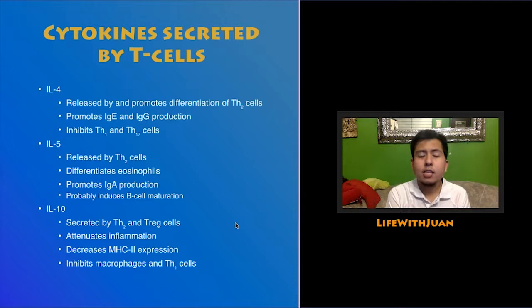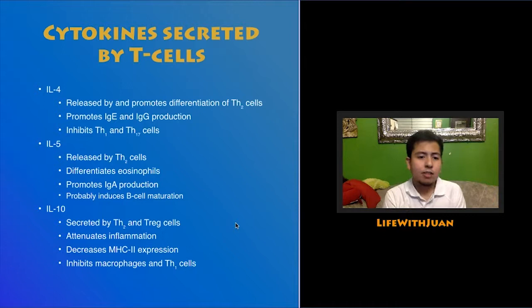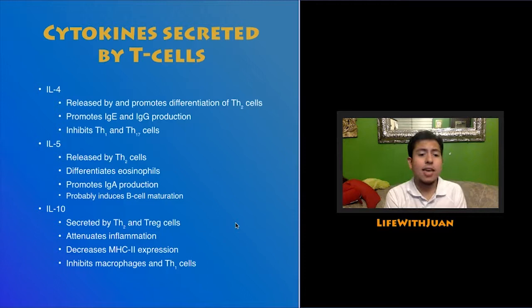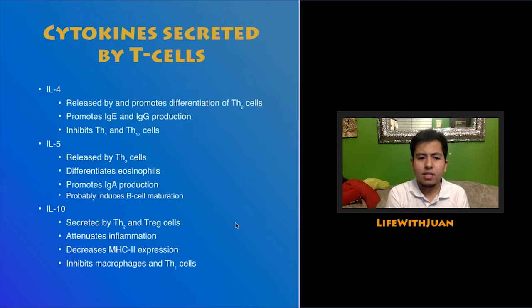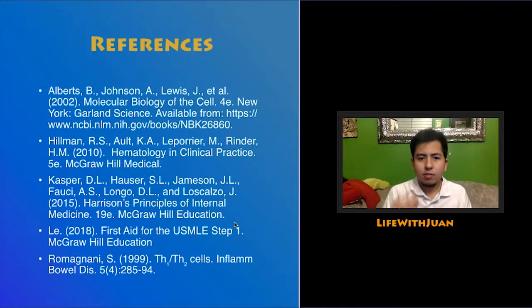IL-5 is released by TH2 cells and causes differentiation of eosinophils — a helpful mnemonic being that E is the fifth letter of the alphabet, and IL-5 promotes differentiation of eosinophils, which are also stimulated by IgE. IL-5 also promotes production of IgA and likely induces maturation of B cells. IL-10, secreted by TH2 and T regulator cells, attenuates inflammation, decreases expression of IL-2, and inhibits macrophages and TH1 cells, putting a limit on inflammation.